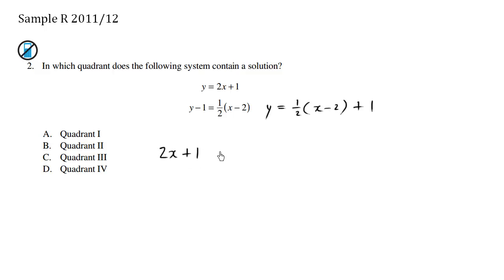So we have 2x plus 1 equals this one here, which is 1 half x. I'm using distribution, minus 2 times a half is going to be minus 1 plus 1, that's this part here, and these cancel out. I'm going to multiply both sides here by 2, so we end up with 4x plus 2 equals 2. 1 half times 2 is simply 1, so we have x.